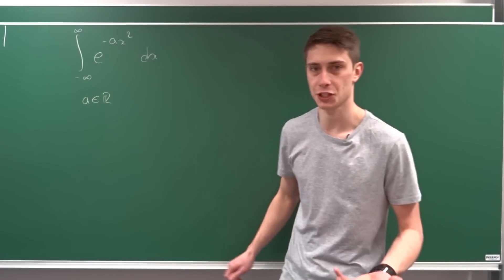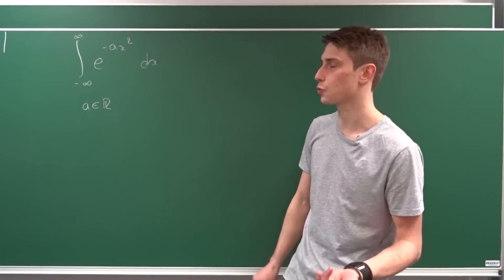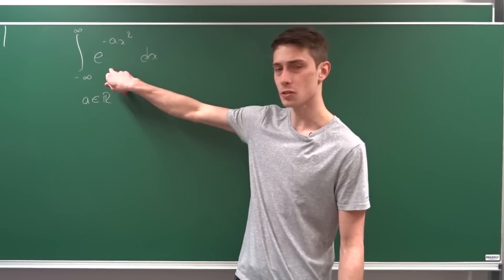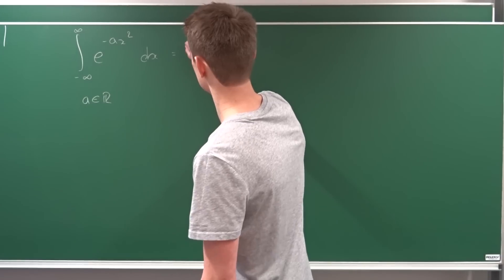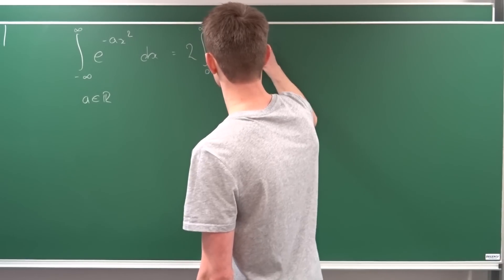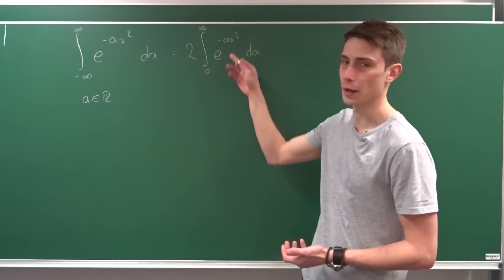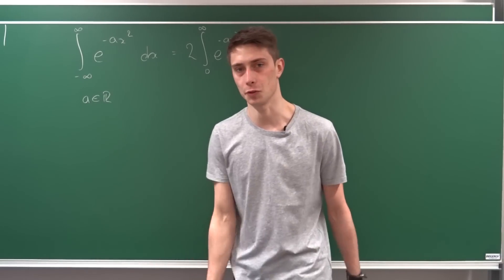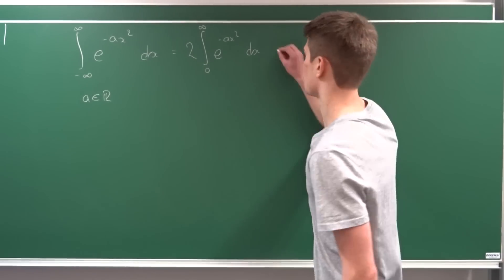We've got a symmetric integral, so let's check if it's odd or even. If you plug in minus x, then minus x squared is just x squared, so this function stays itself when plugging in minus x. That means this is an even integral. We can rewrite the integral from minus infinity to infinity as two times the integral from zero to infinity of e to the minus ax squared dx. This parameter a is quite important — it could be one half, giving you the probability integral, and a is an element of the real numbers.